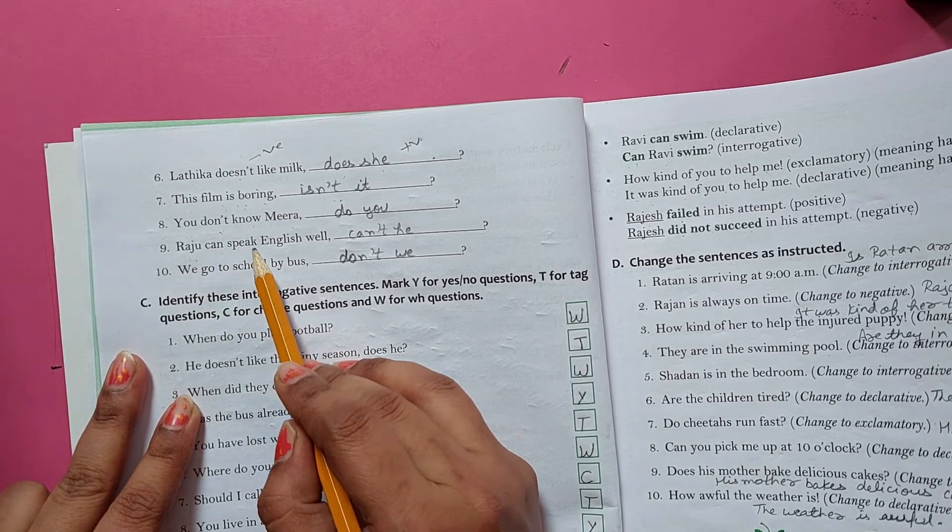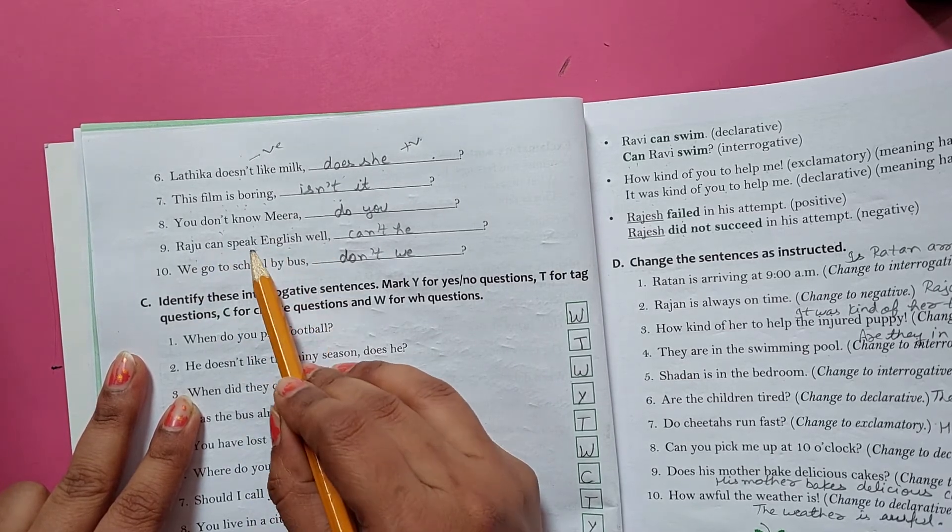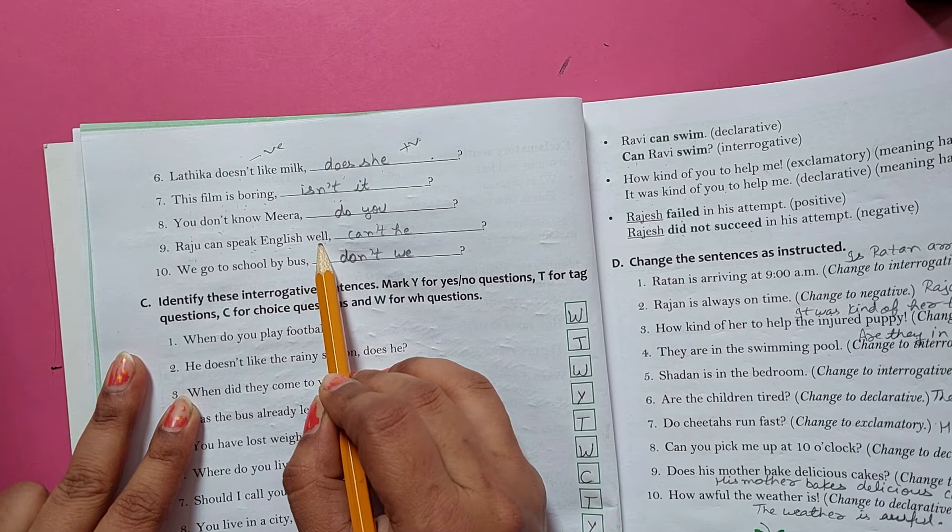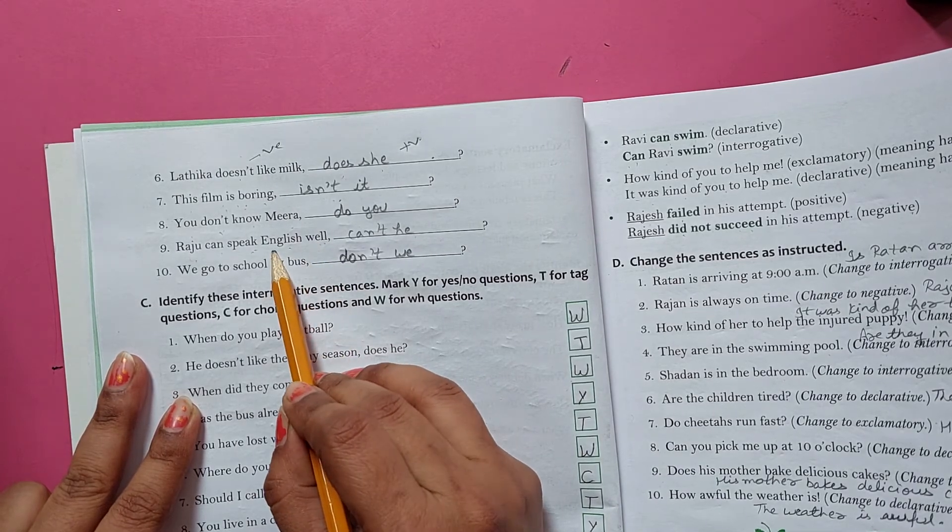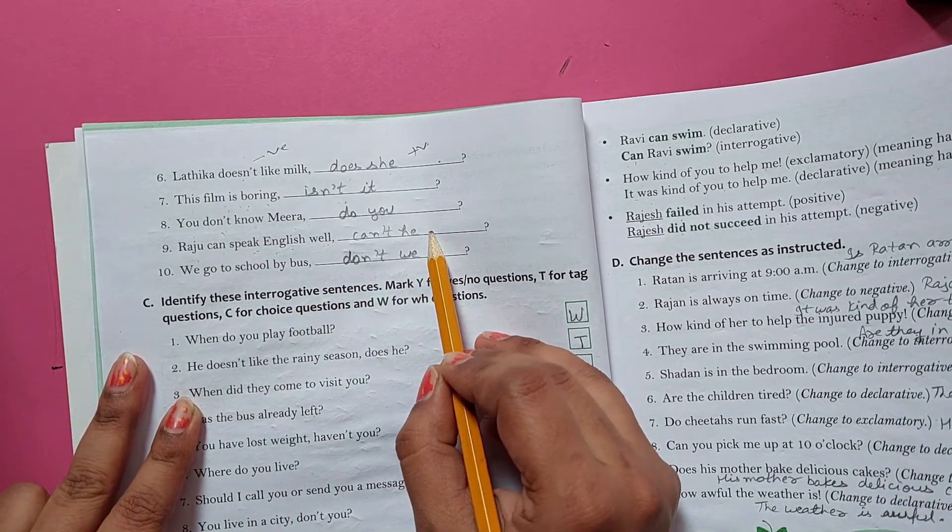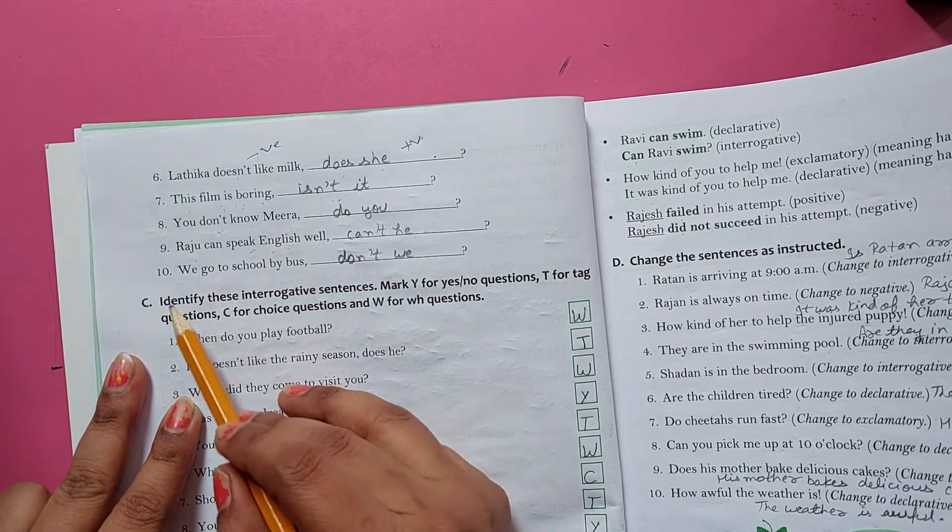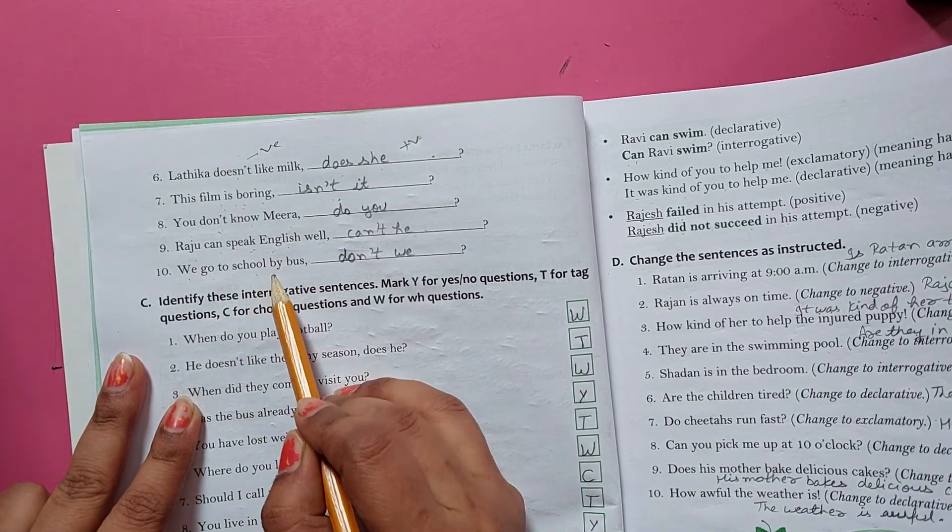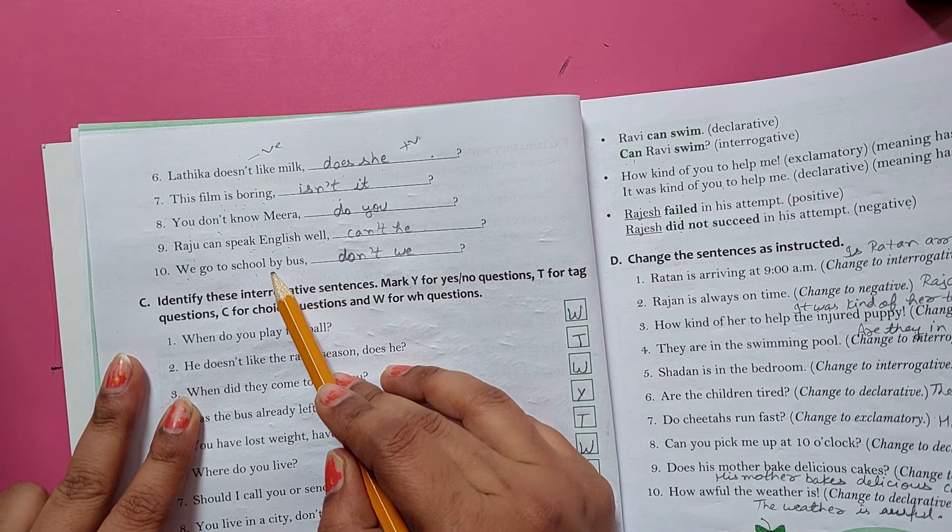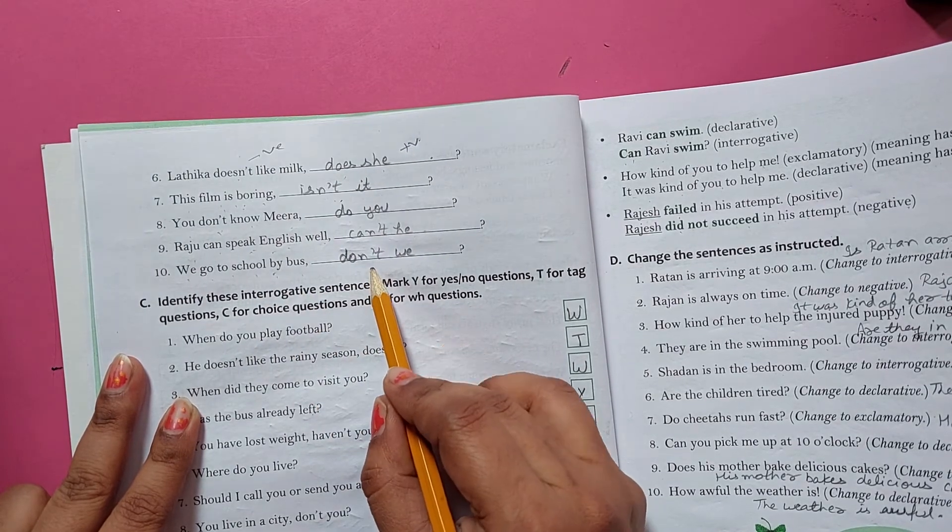Raju can speak English well. Jo Raju hai woh English achhi bol leta hai. Yeh positive mein hai toh iska answer negative mein. Can't he? We go to school by bus. Yeh bhi positive mein hai toh ismein kya aa jayega negative mein? Don't we.